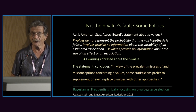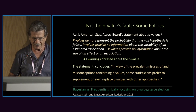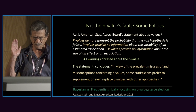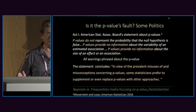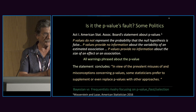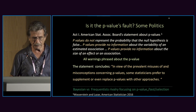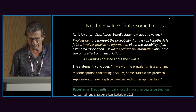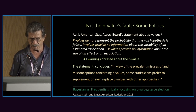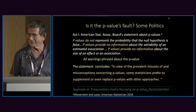The ASA statement said p-values do not represent the probability that the analysis is correct, p-values provide no information about various things — not about confidence intervals, not about Bayesian odds. The statement concluded that in view of the relevant misuses and misconceptions concerning p-values, some statisticians prefer to supplement or even replace p-values with other approaches such as confidence intervals, Bayesian statistics, and so on.